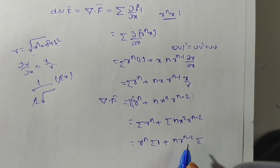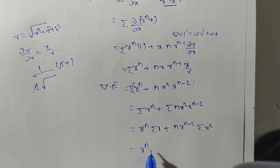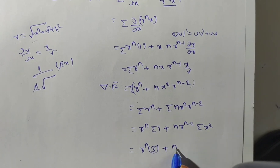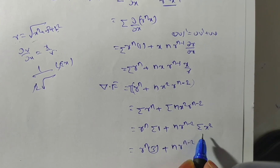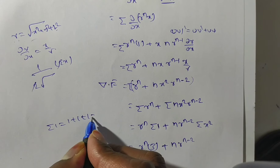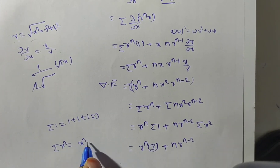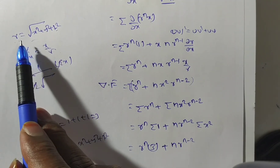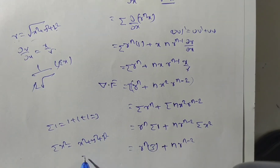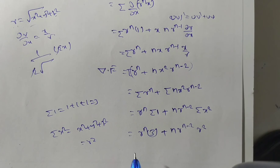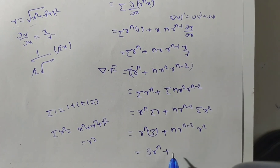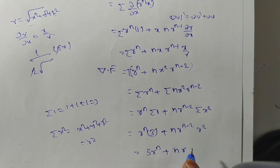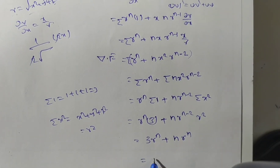Here n and r^(n-2) are constants, so they come outside. We get r^n · Σ1 + n · r^(n-2) · Σx². Now Σ1 = 1 + 1 + 1 = 3, and Σx² = x² + y² + z². Since r² = x² + y² + z², we substitute r². So del · f̄ = 3r^n + n · r^(n-2) · r² = 3r^n + n · r^n.